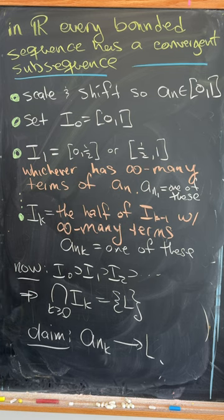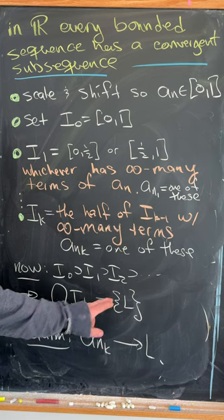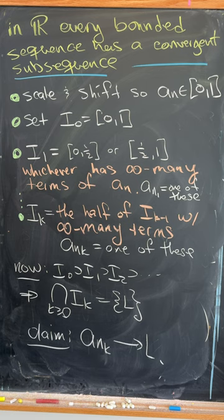Now we've got this nested sequence. We know by the nested sequence theorem that the intersection is non-empty, but since these all have length 1 over 2 to the k, we know that the intersection will be a single number L. And then all you have to do is prove the claim that our subsequence converges to L.